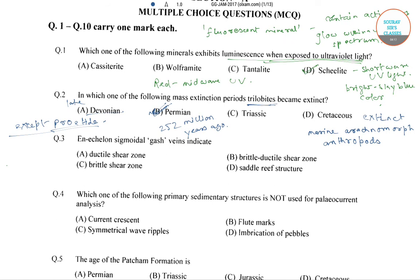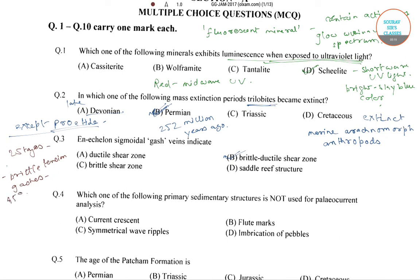Now let's go to the third question: en-echelon sigmoidal gash veins indicate what? The correct answer is option B. In the first stage, there is a formation of brittle tension gashes which are oriented approximately 45 degrees from the fault trend.